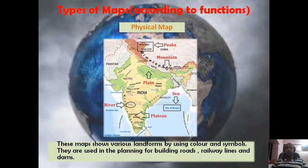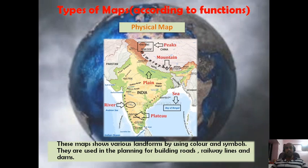We also classify maps according to function. On a physical map, various landforms are shown using colors and symbols. For example, peaks are shown by black triangles, water bodies by blue color, and plateaus by red color. Physical maps are used in planning for building roads, railway lines, and dams.